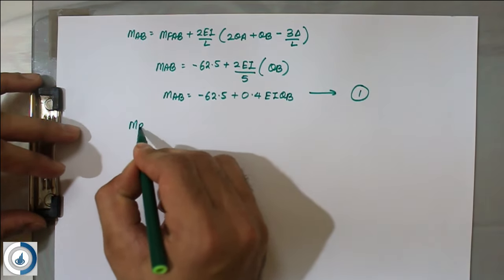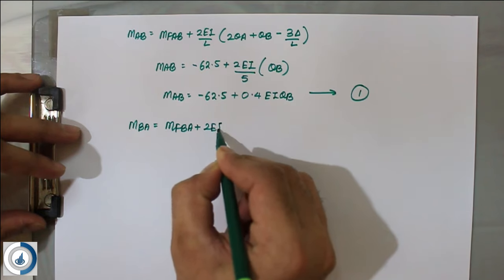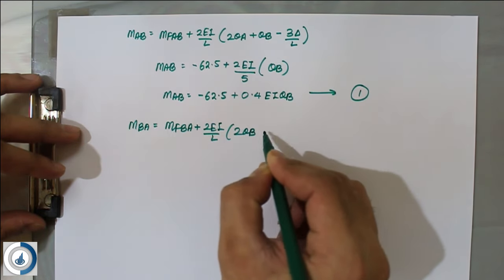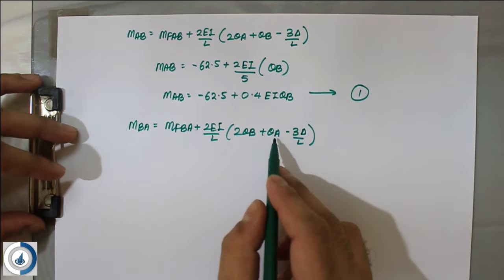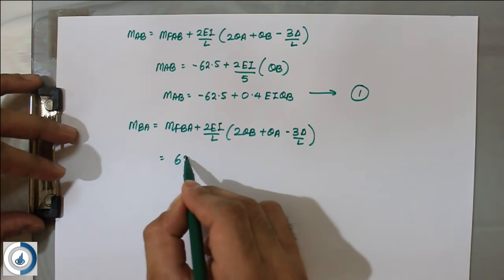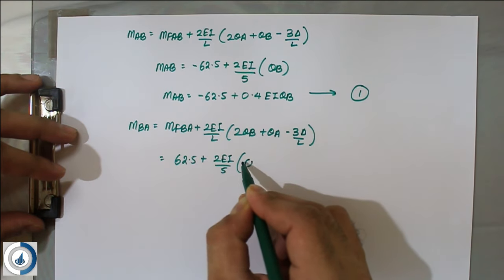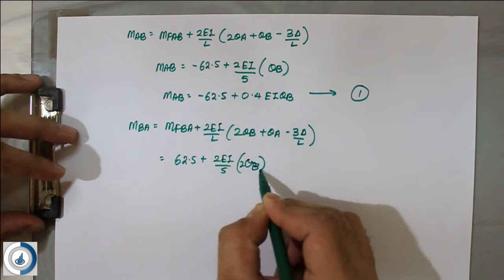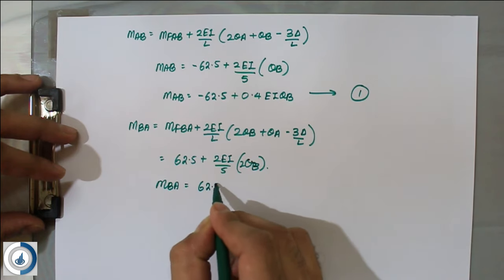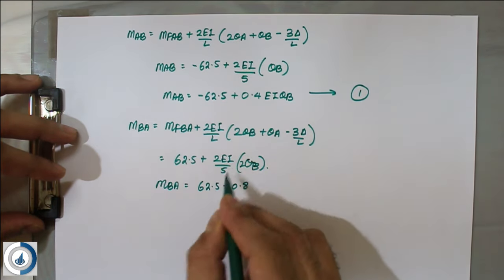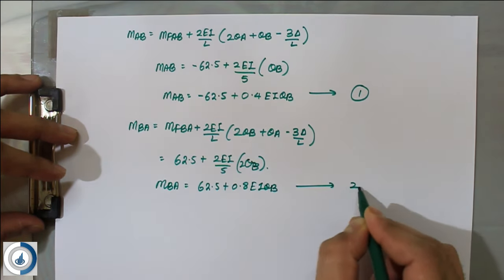For MBA: MBA = MFBA + (2EI/L)(2θB + θA − 3δ/L). With θA = 0 and δ = 0, this gives MBA = 62.5 + (2EI/5)(2θB) = 62.5 + 0.8EI·θB. This is equation number 2.